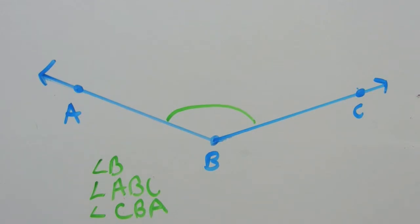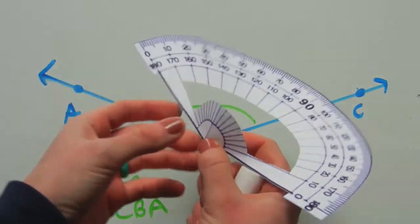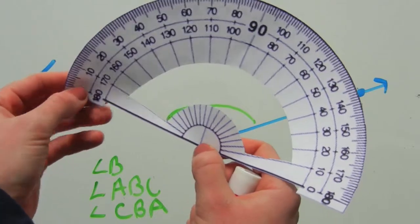So again, with the protractor, we're going to set it up to where the vertex falls on this tick mark, and we're going to line up one ray with the zero degrees.